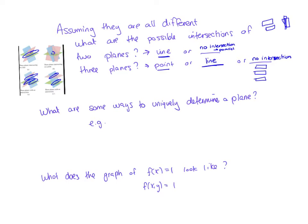A follow-up question: what are some of the ways that we can uniquely define a plane? We've seen that if you have three points, I can find the two vectors in the plane, take the cross product to get the normal vector, and then that's going to uniquely determine my plane — as long as the three points are not collinear.